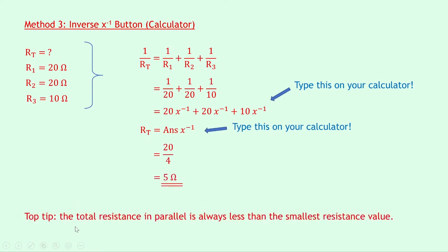A top tip: the total resistance in parallel is always less than the smallest resistance value. Notice how our total resistance is 5 ohms, but our smallest resistance value was 10 ohms — double that. This always holds true regardless of the resistance values, so it's a good way of checking that your final answer is roughly what it should be.